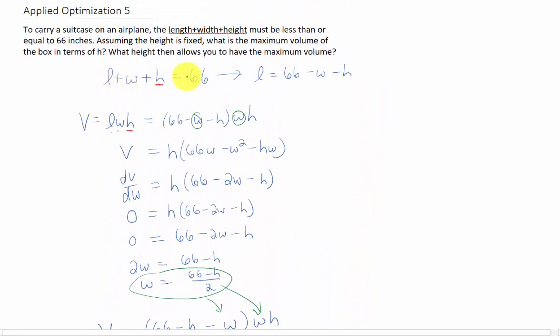We had a suitcase, and its length plus width plus height needed to be 66. We solved this for L, and we plugged this into our equation for volume of a rectangle. When we did that, we got an equation of one variable. Of course, that was assuming that h is a constant.